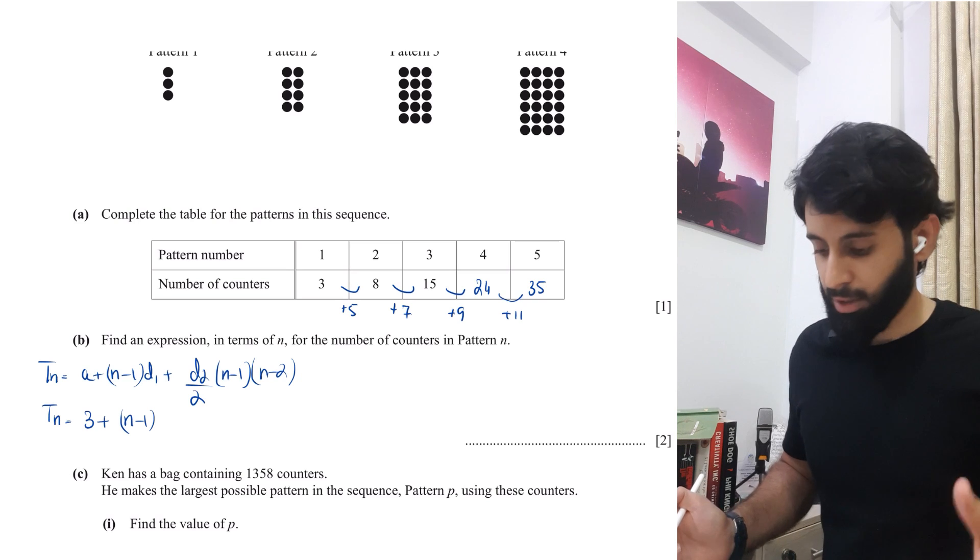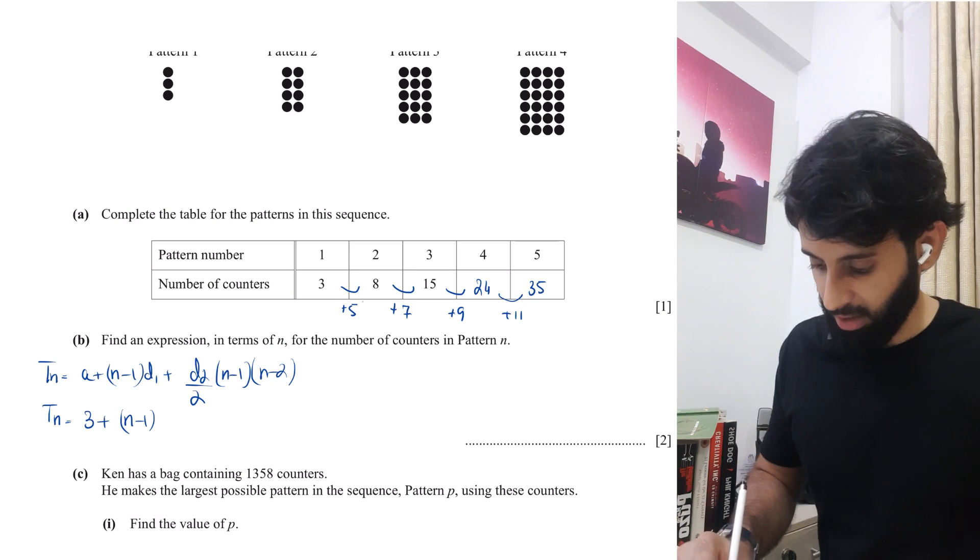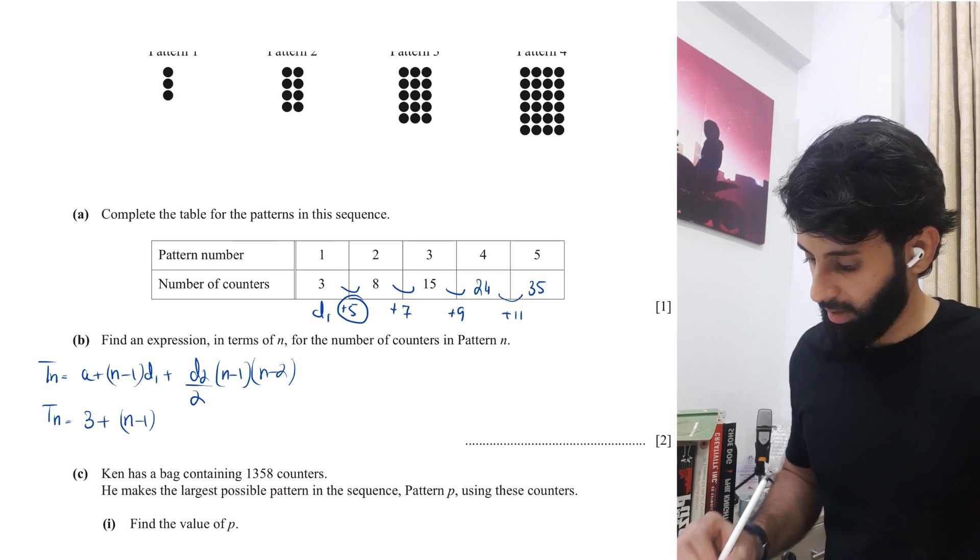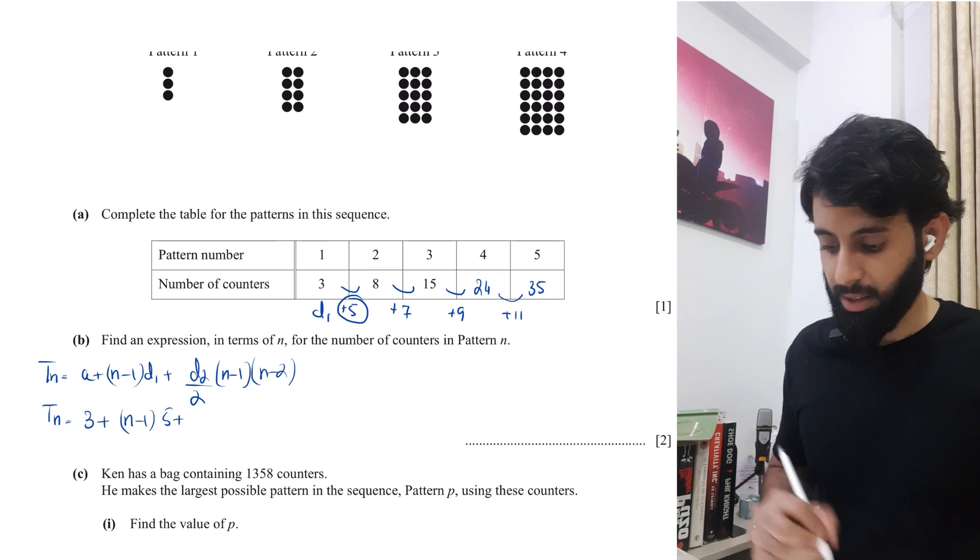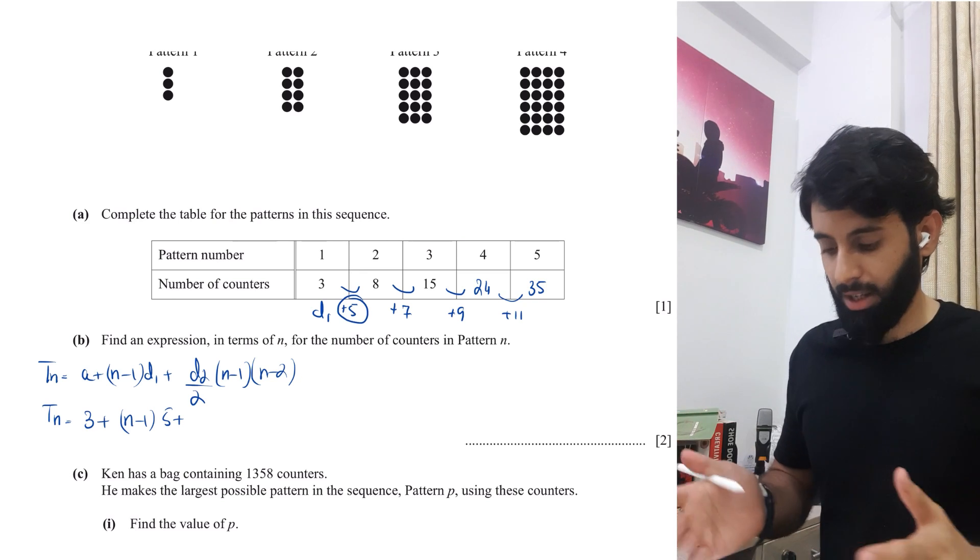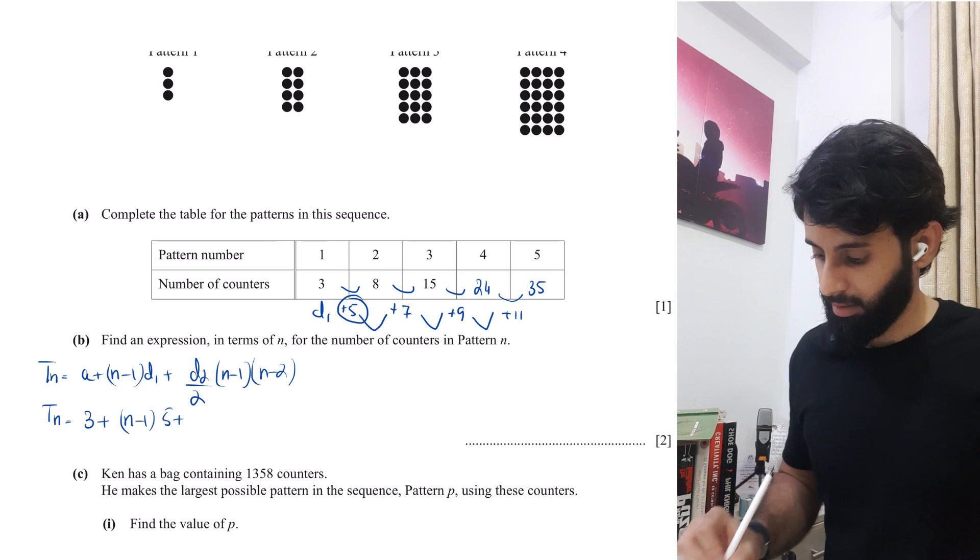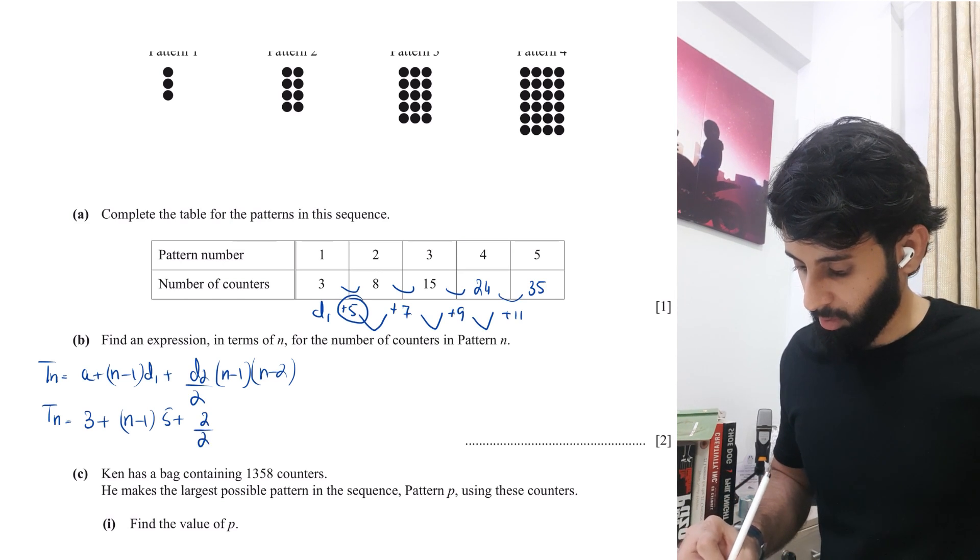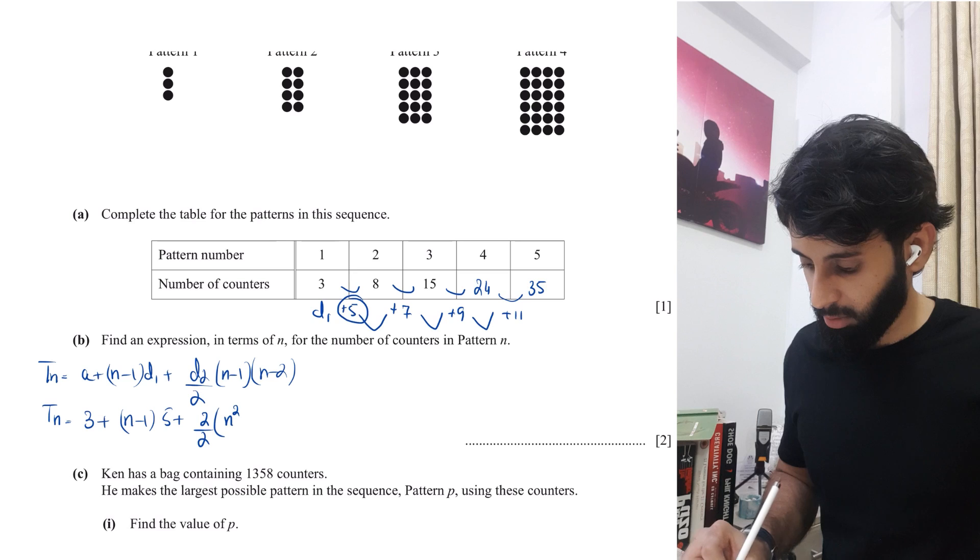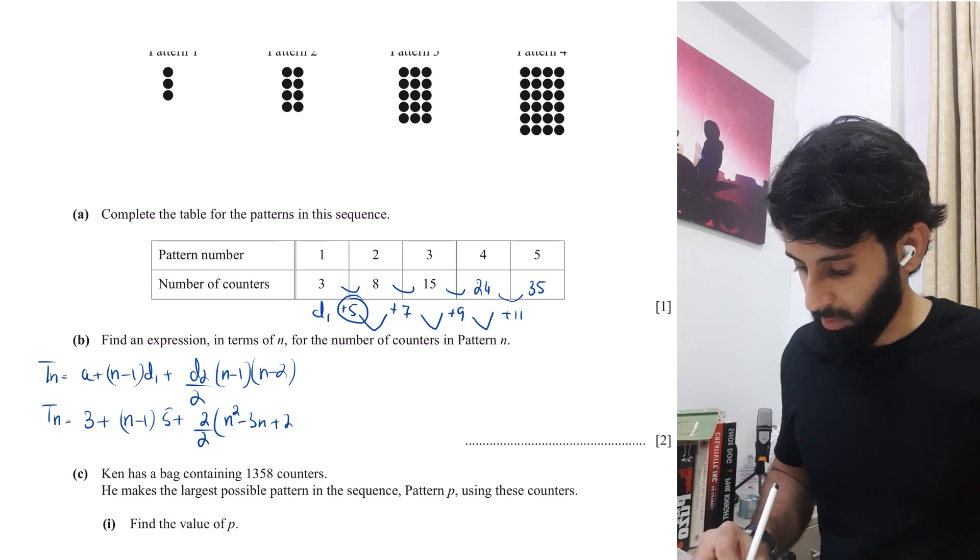So three plus N minus one. D1 is basically the difference between the first two terms, which in this case is five. So I'll label it over here. So five plus D2 is the difference of the difference, which is the same and that's two. Okay. So the difference between five and seven, seven and nine, nine and 11, and that's two. So plus two upon two. And then if you expand N minus one into N minus two, you get N square minus 3N plus two.